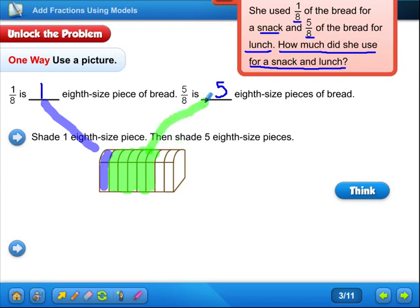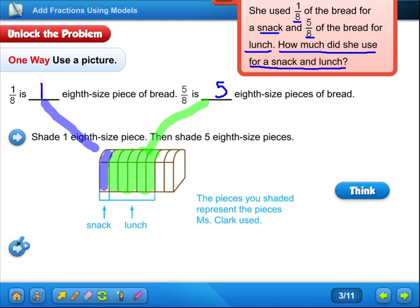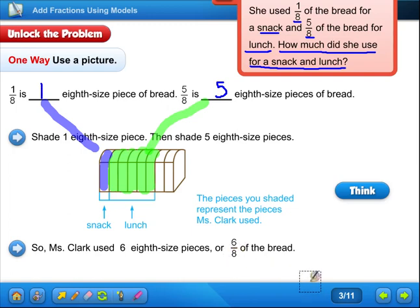That was for the snack. Alright, I'm sorry, that was for the lunch. This one was for the snack. 1 eighth was for the snack. 5 eighths was for the lunch. And it shows snack, lunch, the pieces you shaded represent the pieces Ms. Clark used. So Ms. Clark used, how much did she use? She used all together 6 eighth size pieces. Or, how do you write it as a fraction? 6 eighths of the bread.